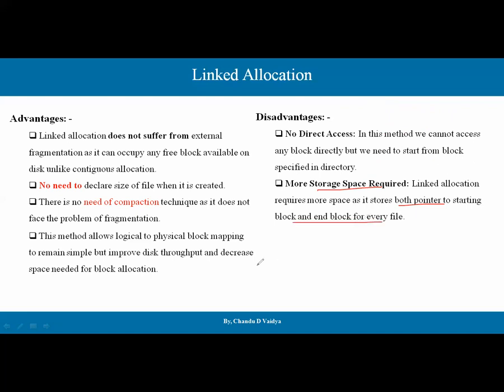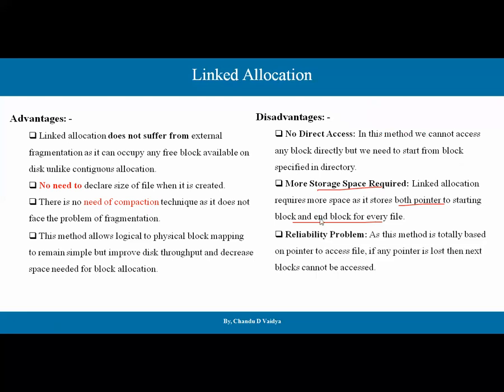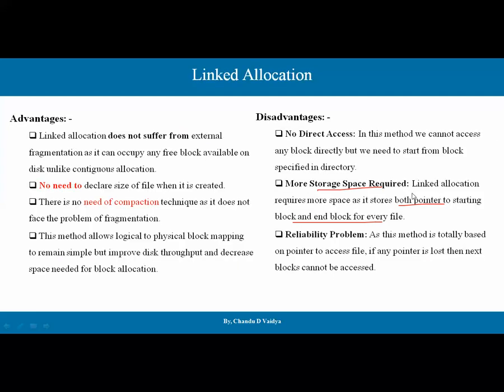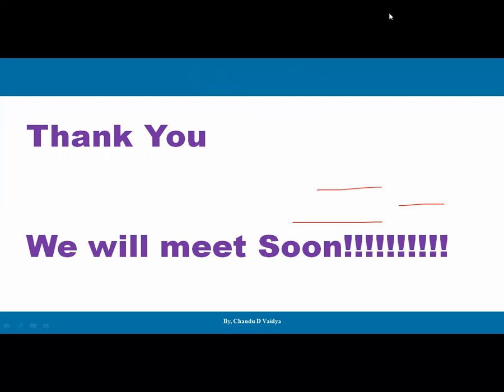Another disadvantage is the reliability problem. This method is totally based on pointers to access the file. If any pointer is lost, the next block cannot be accessed — meaning if any pointer in the chain is corrupted, we lose the reference to the next block. So there is a reliability problem here. In summary, linked allocation only requires the starting and ending block in the directory, but suffers from more space usage for pointers and reliability issues.